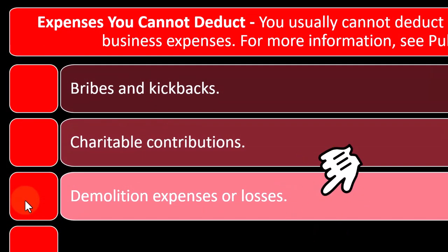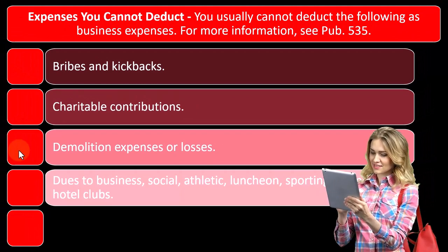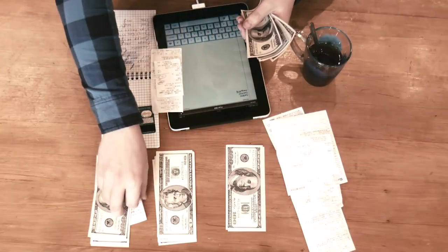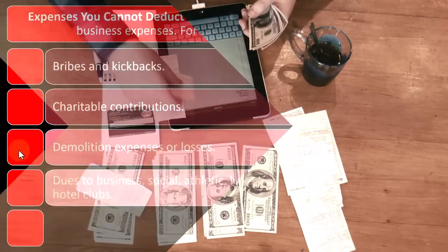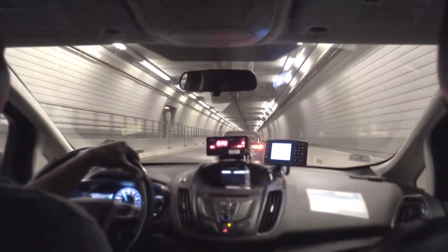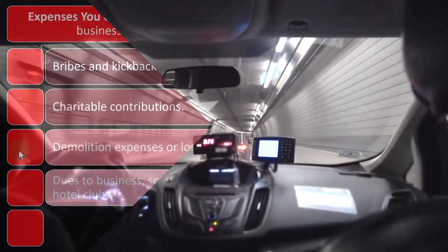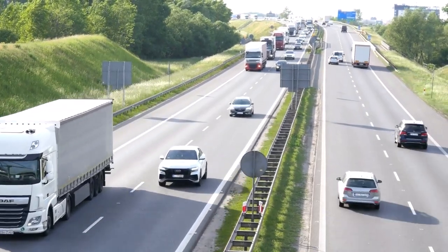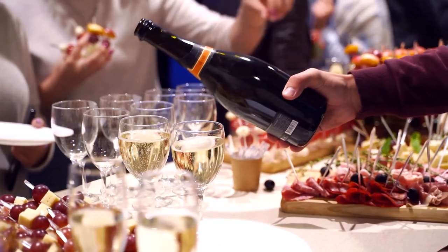Also non-deductible are demolition expenses or losses, and dues to business, social, athletic, luncheon, sporting, airline, and hotel clubs. These sound kind of personal. People have tried to set up clubs and argue they're business-related, but it seems over the top — similar to driving a $200,000 car and claiming it's just for business when a $30,000 car would do. Building your network sounds business-related, but when your network is a social golf club, it seems like a little too much.